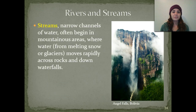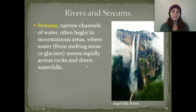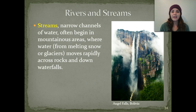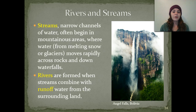Then we have our rivers and streams. Streams are going to be narrow channels of water that often begin in mountainous areas where water from melting snow or glaciers moves very rapidly across rocks and down waterfalls. Rivers are formed whenever streams combine with each other, as well as with the runoff water from the surrounding land.